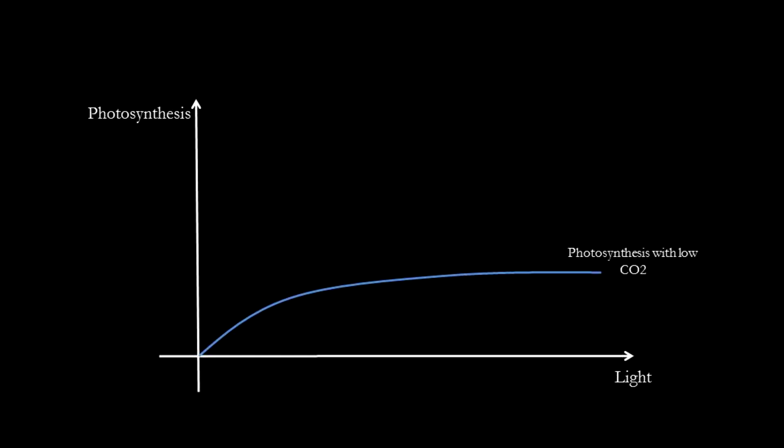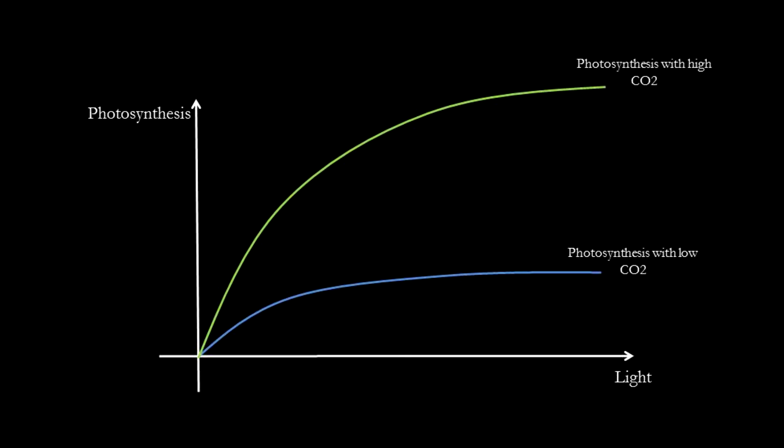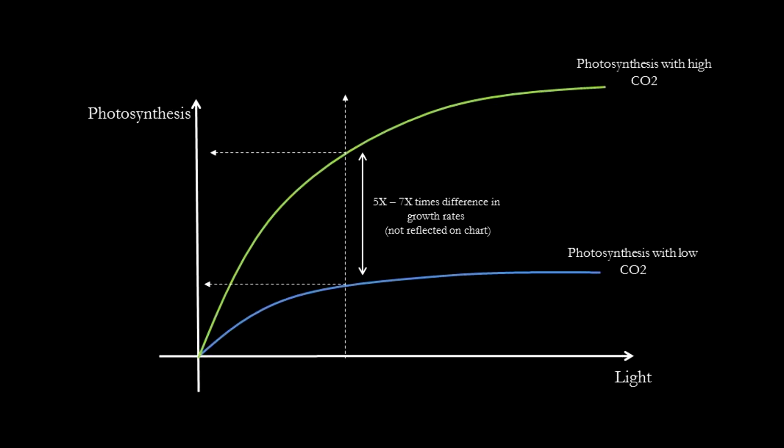In a low-tech tank, CO2 is often the ceiling that caps the growth rates. Therefore the common recommendation is that having excessive light over a low-tech tank does not achieve a higher growth rate. By injecting CO2 into the tank, we break this CO2 limitation and we can achieve growth rates five to seven times faster compared to a low-tech tank.